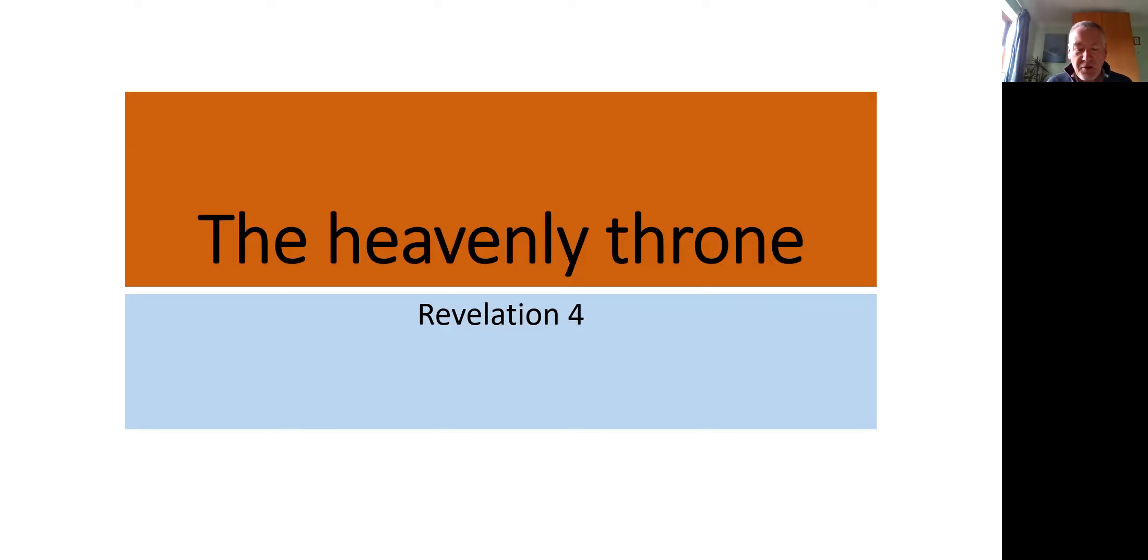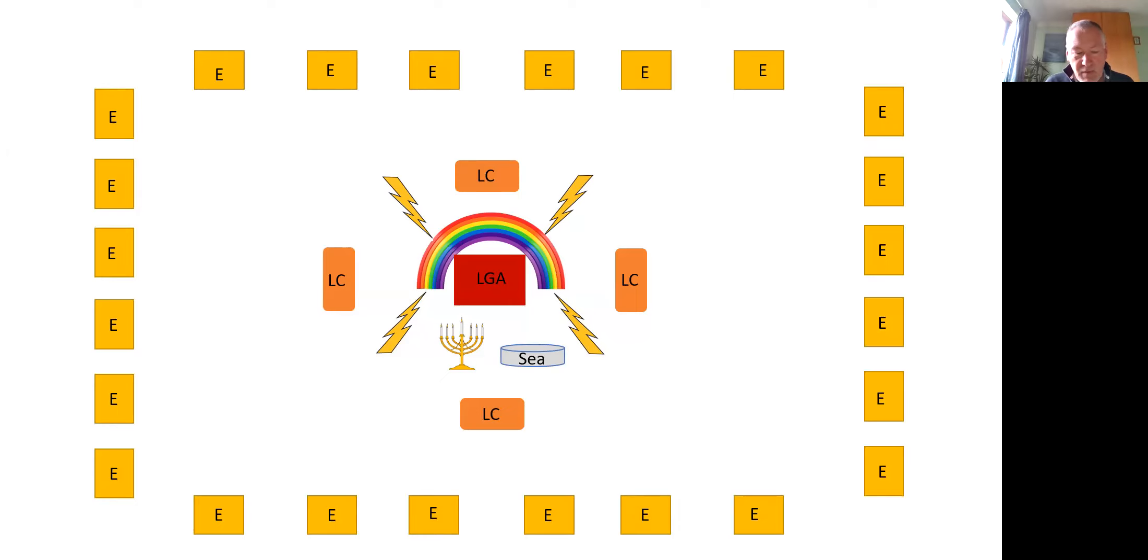So in John's vision, the throne is very much at the centre. And the Lord God almighty is seated upon it. And so we've got a schematic diagram here on the screen of the vision that he saw. In the centre is the throne of the Lord God almighty. And around the throne are the four living creatures. And immediately in front of the throne, there are seven blazing lamps and a sea of glass. And around the throne are the 24 elders, each seated on a throne. And as the vision proceeds into chapter five, we'll see that the throne is further surrounded by thousands upon thousands of angels. I'm going to take us through the components of the vision, and then stand back to consider our response to what we are seeing.